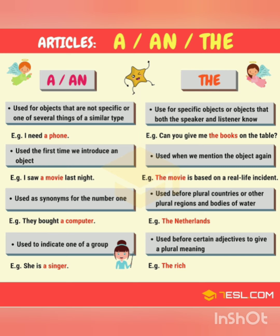Examples are: I need a phone, I saw a movie last night, they brought a computer. The article 'a' is used with nouns that start with consonant sounds, and 'an' is used with words or nouns that start with vowel sounds — including words starting with H that have a vowel sound, like 'an hour'.